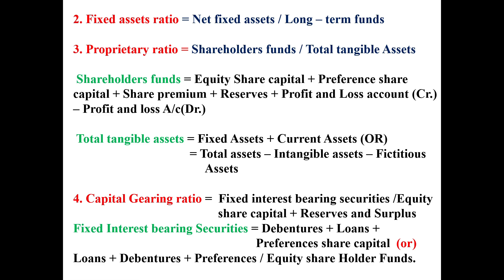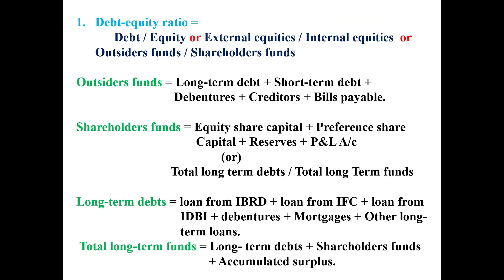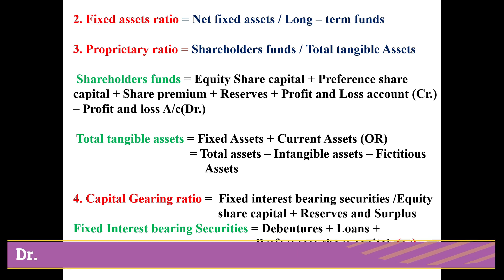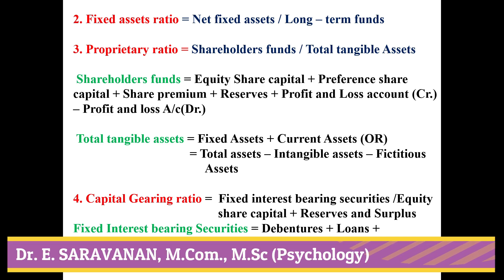So the Long Term Solvency Ratio has four ratios: 1. Debt Equity Ratio, 2. Fixed Assets Ratio, 3. Proprietor Ratio, 4. Capital Gearing Ratio.